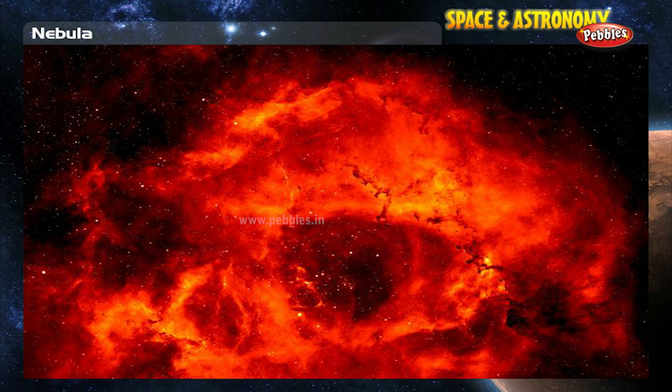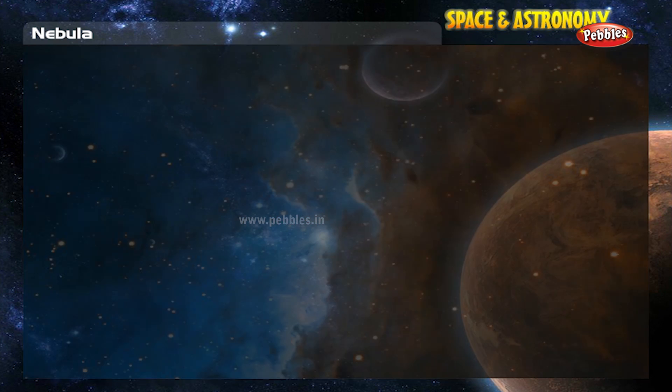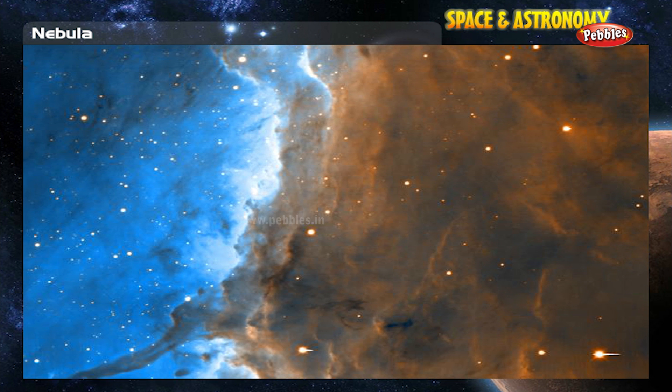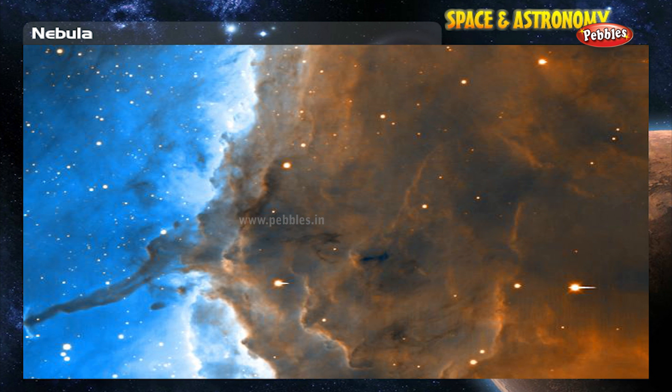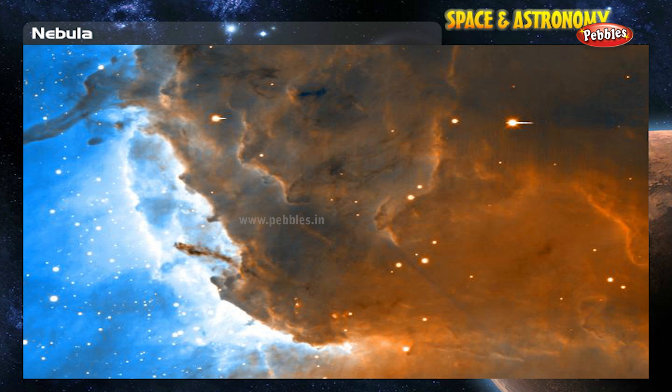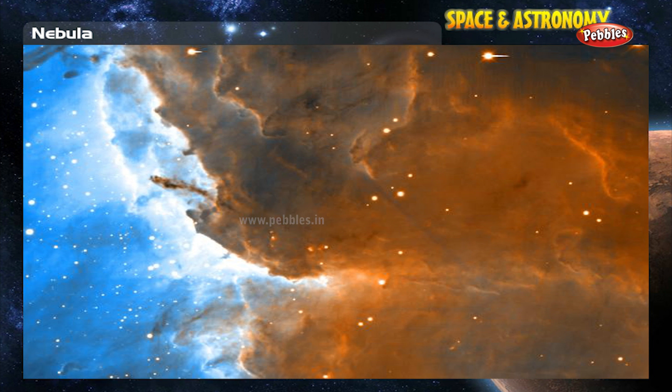Examples of these types of nebulae are the Rosette Nebula and the Pelican Nebula. The size of these nebulae, known as H2 regions, varies depending on the size of the original cloud of gas. These are sites where star formation occurs.